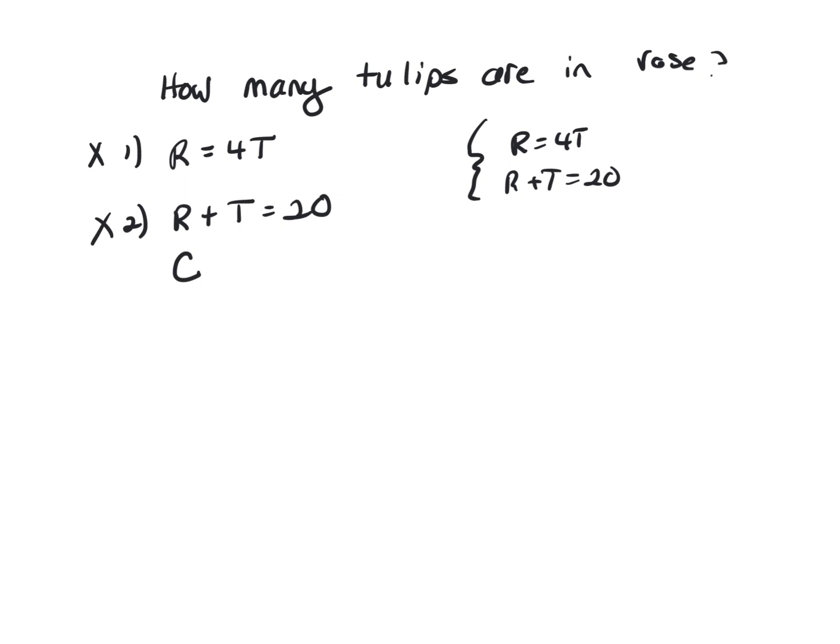I'm going to go ahead and show you how you would solve it, and see if that helps. Okay? But I know the answer is C. We know R is 4T, so you could just substitute that 4T in for R, and then you've got an equation with just T in it, so you could solve for T.